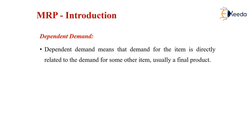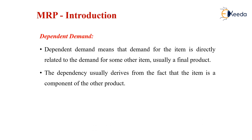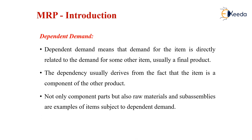Dependent demand means the demand for the item is directly related to the demand for some other item, usually a final product. This dependency usually derives from the fact that the item is a component of the other product. Not only the component parts but also raw materials and sub-assemblies are examples of items subjected to dependent demand.